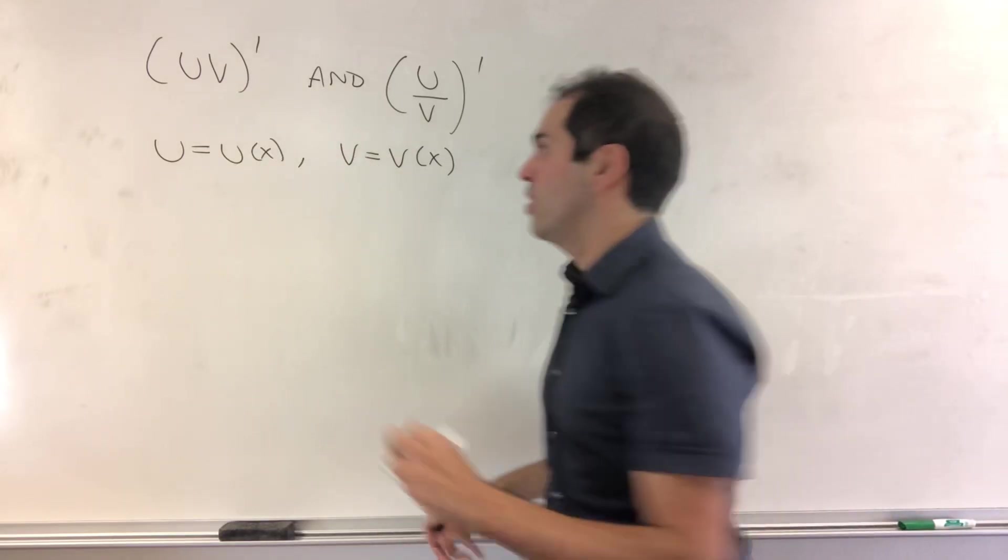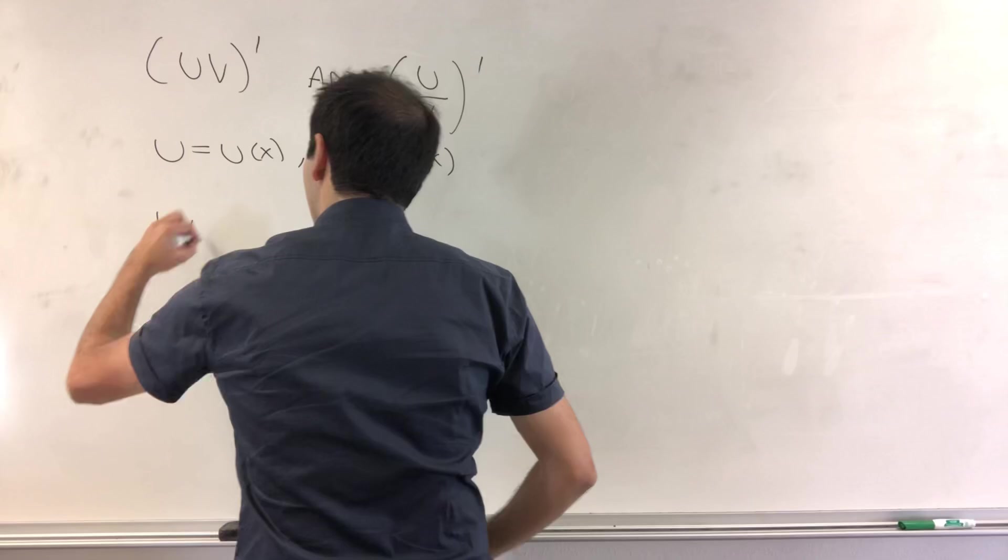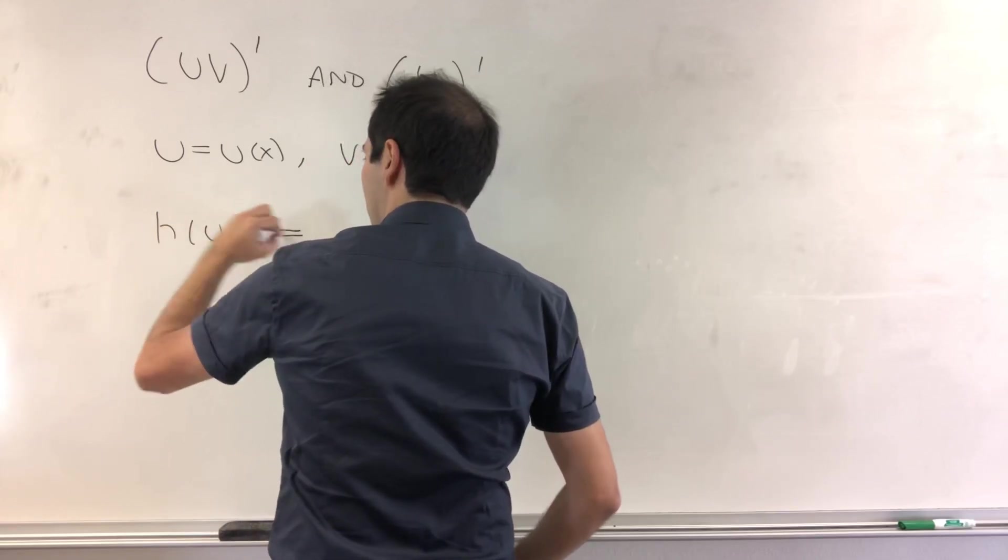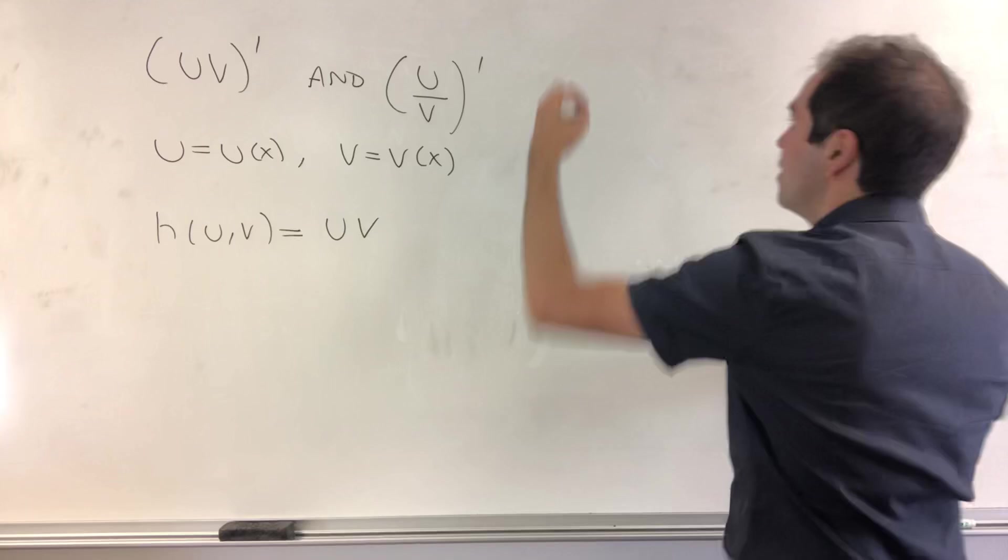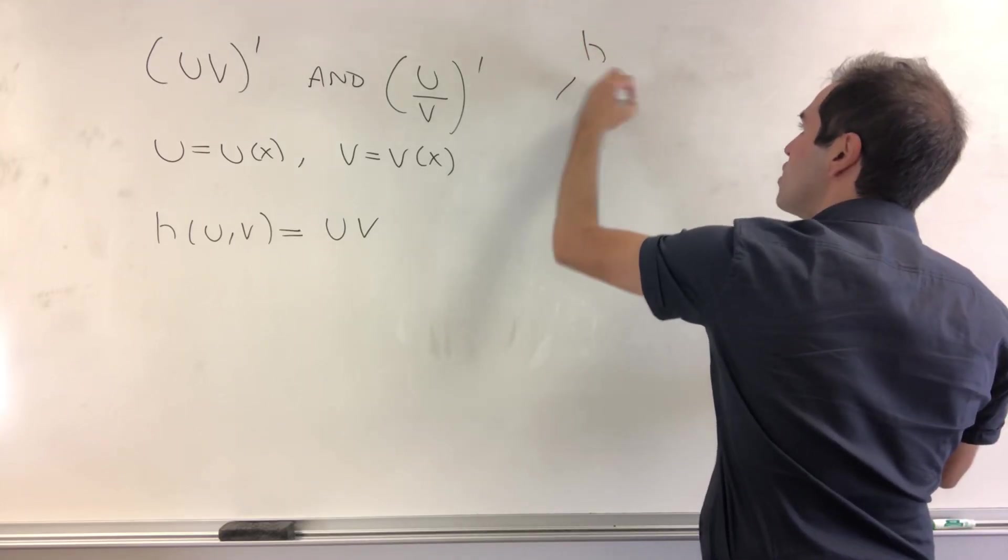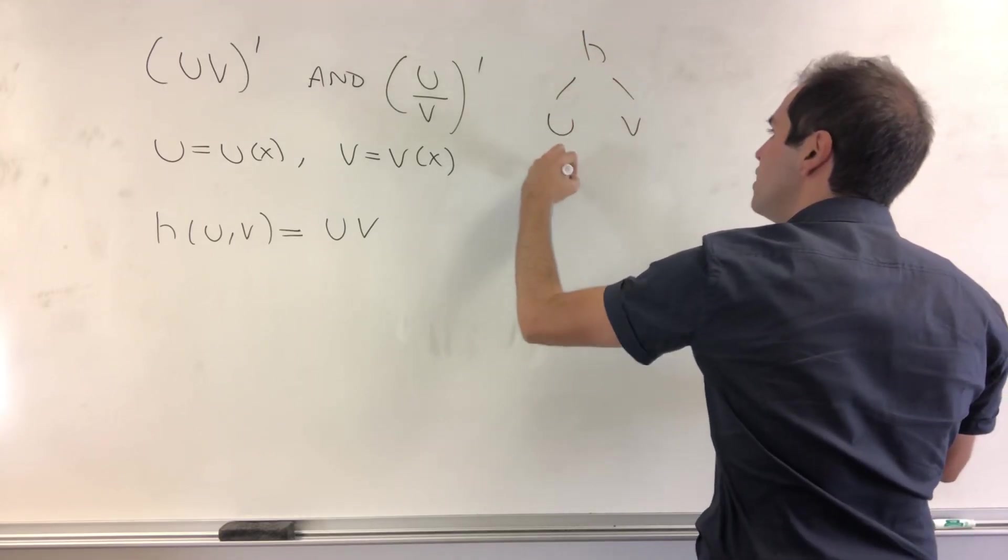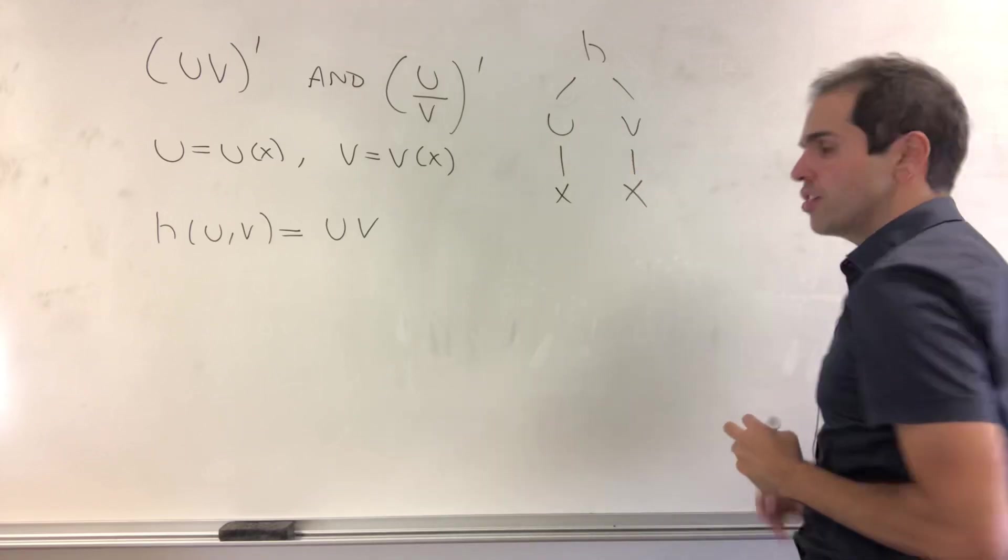Well, for the first one, just choose h of u,v to be just a product. Then what do we have? h is a function of u and v, and u and v are functions of x. So what does the Chain Rule say?